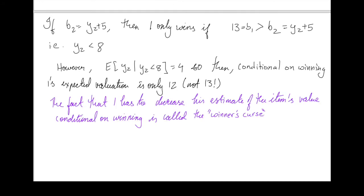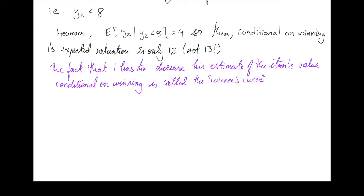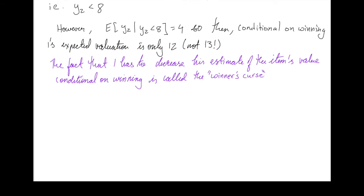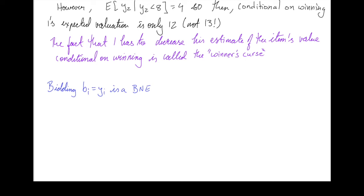So let's try and figure out what the Bayes-Nash equilibrium is of this game. Obviously, bidding your estimate of the valuation is not a Bayes-Nash equilibrium. It turns out that bidding YI for player I is a Bayes-Nash equilibrium. So let's check that. So let's suppose that player 2 plays according to this strategy. So given Y1, what is 1's expected payoff from bidding B1? If B1 is higher than Y2, which is B2, then player 1 wins.